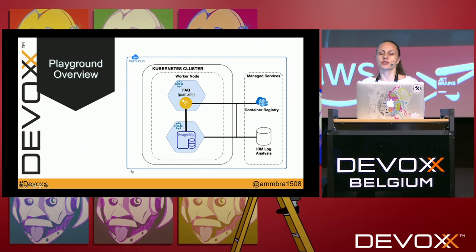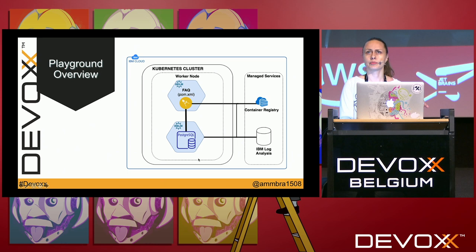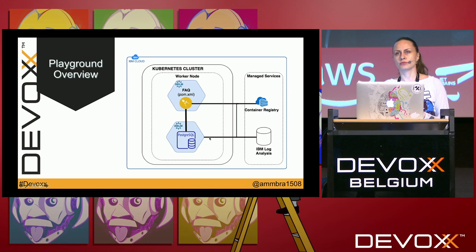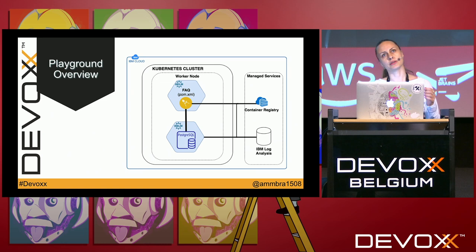For today's playground, I have a very simple Java FAQ application — a question and answer application I'll install with Helm. I'll also manage its persistence with Helm using a PostgreSQL database, stream all logs to the IBM Log Analysis managed service, and store the Docker image in a private container registry. Think of it as real life, but on a smaller scale.